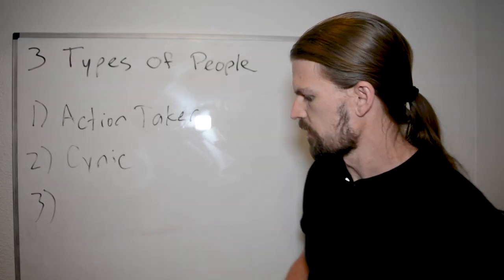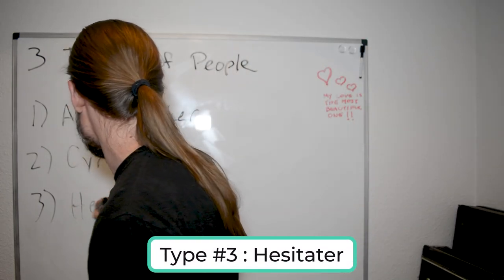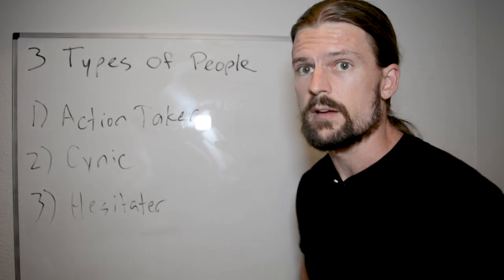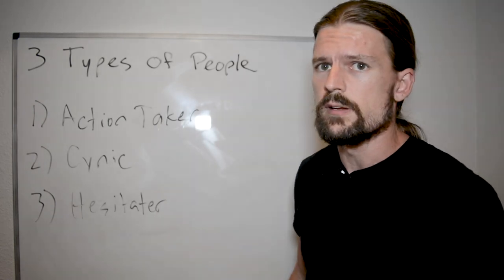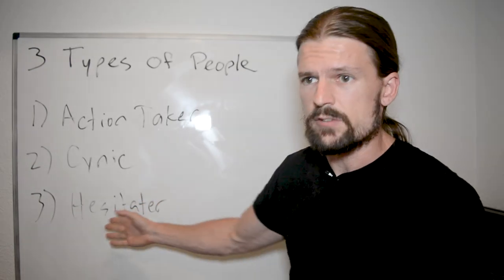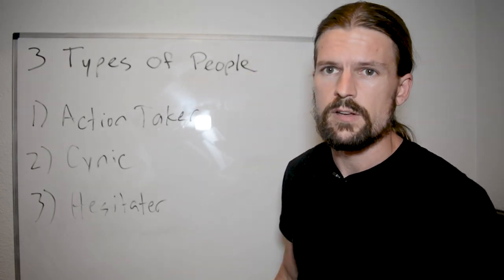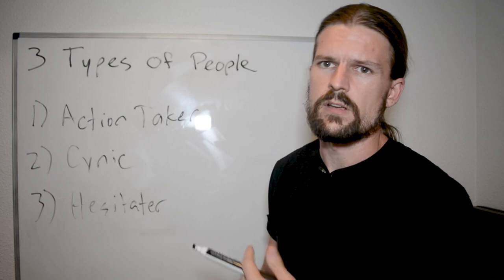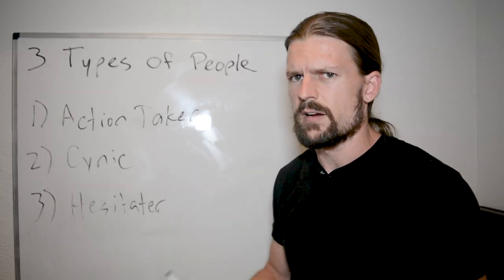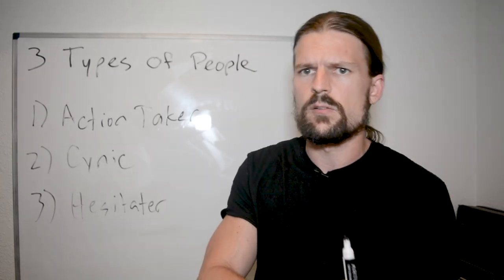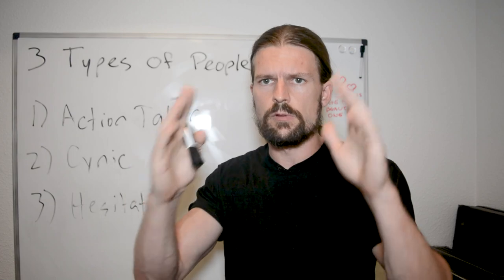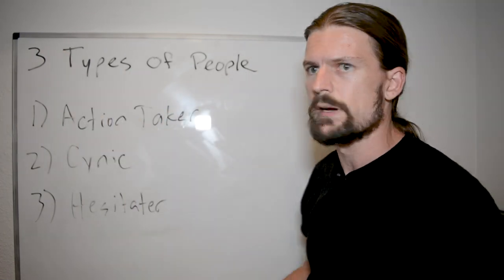And now the third type of person is what I call the hesitator. This is the person who's not an action taker or a cynic, who's a person that sees opportunity, and likes the idea of opportunity, and likes the idea of taking action, but then instead of actually taking action, hesitates instead. Hems and haws, and gets stuck in analysis paralysis, and says, oh well what about the risk, and what if it doesn't work, and is constantly consumed by the negative side of the risk-reward profile. Even though the reward might be like this, and the risk is like this, they're focused on the small risk rather than the greater reward.